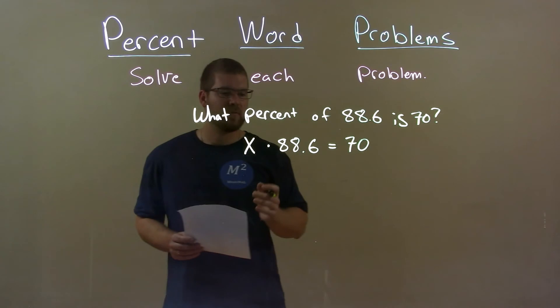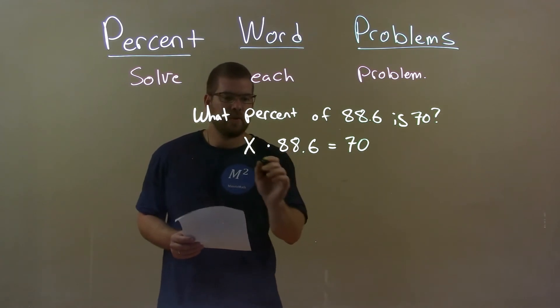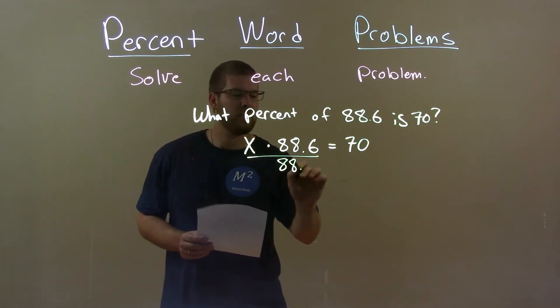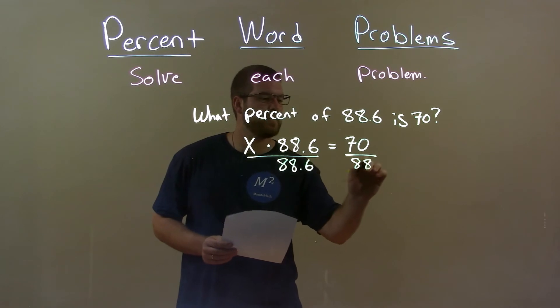So now let's go solve for x. Well, to undo multiplication, we divide by 88.6 on both sides. Then I got x by itself.